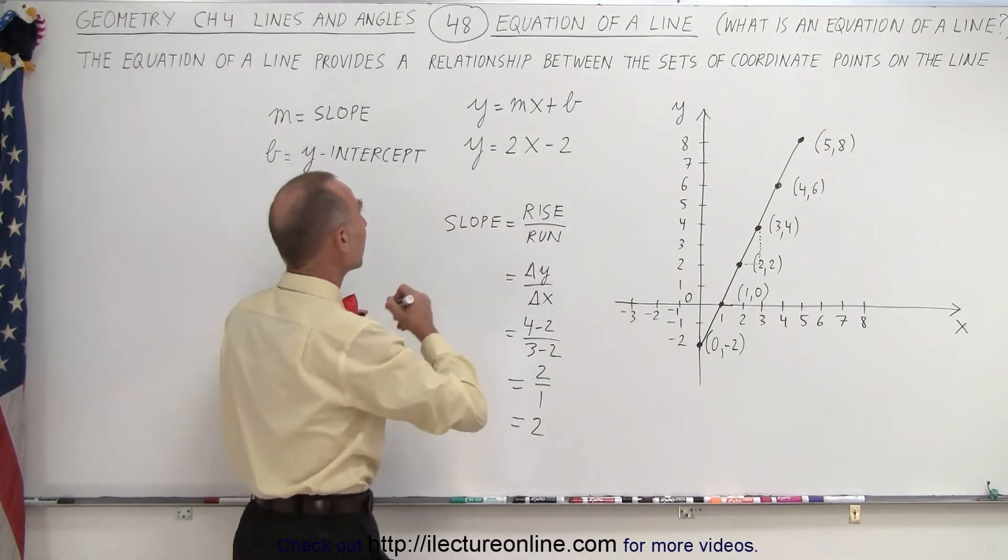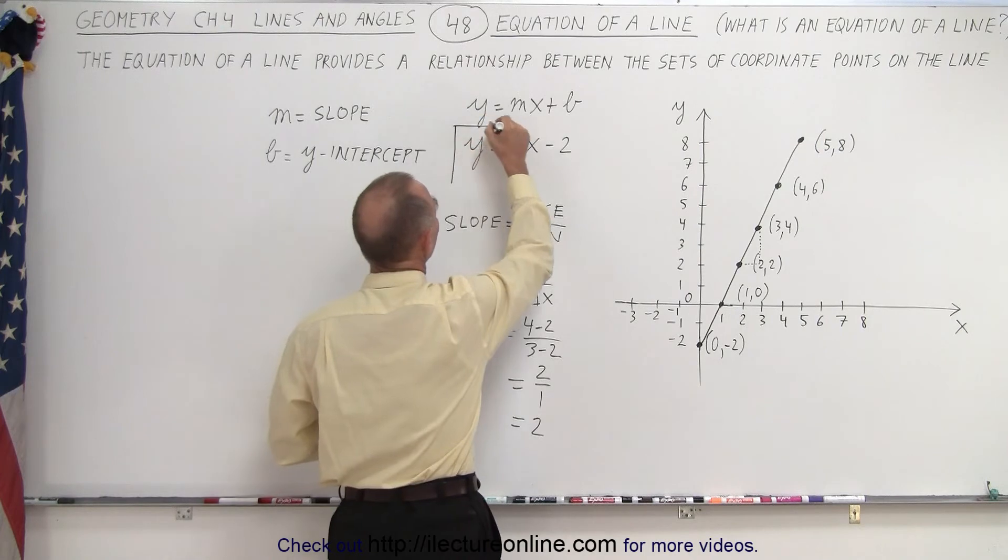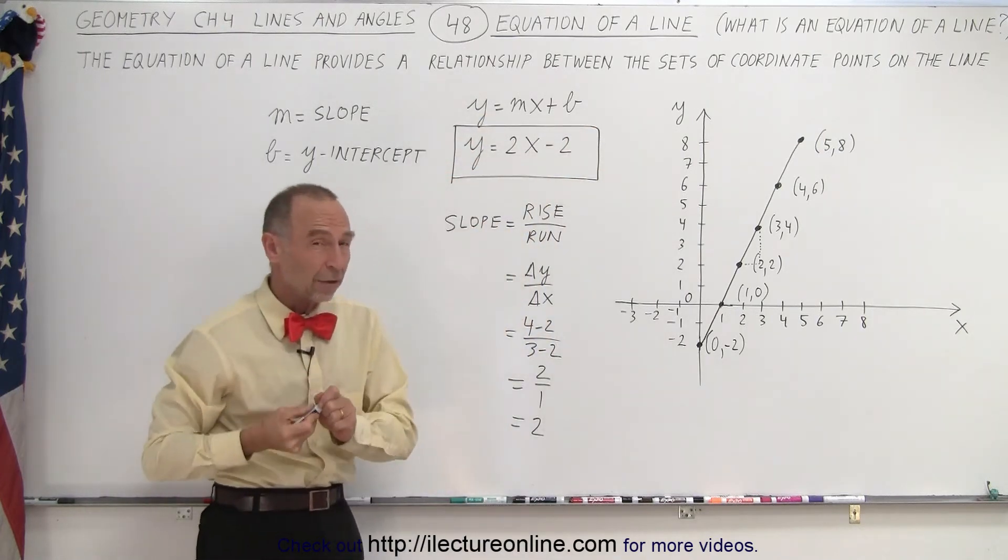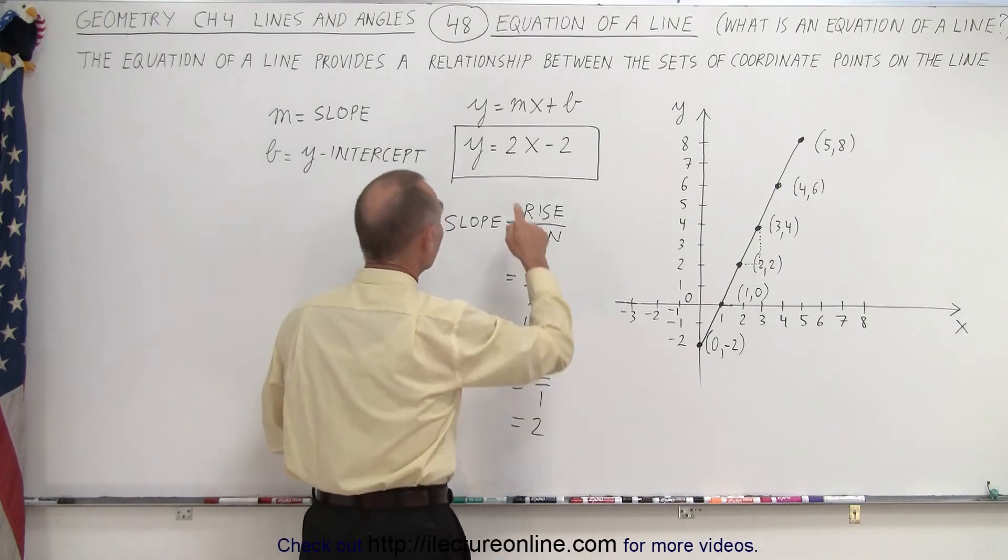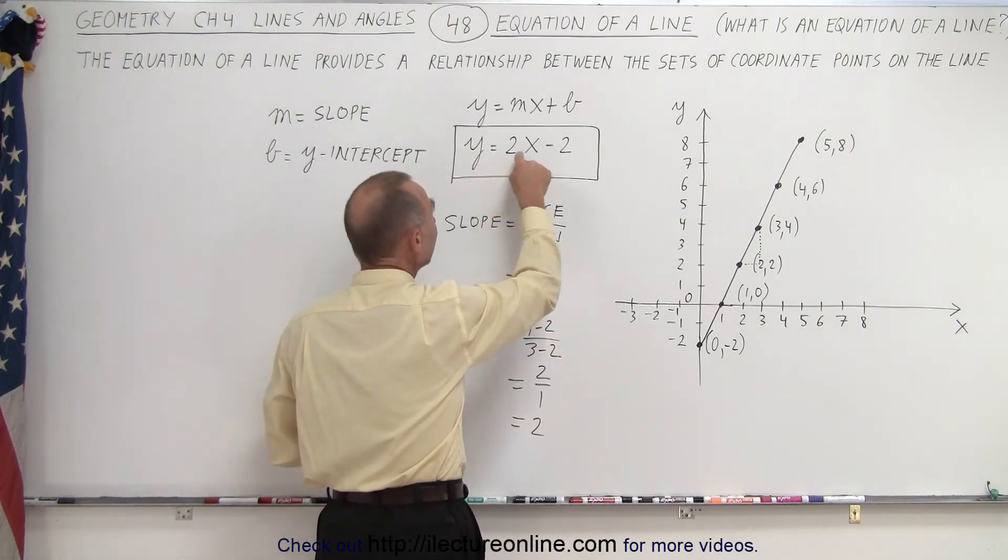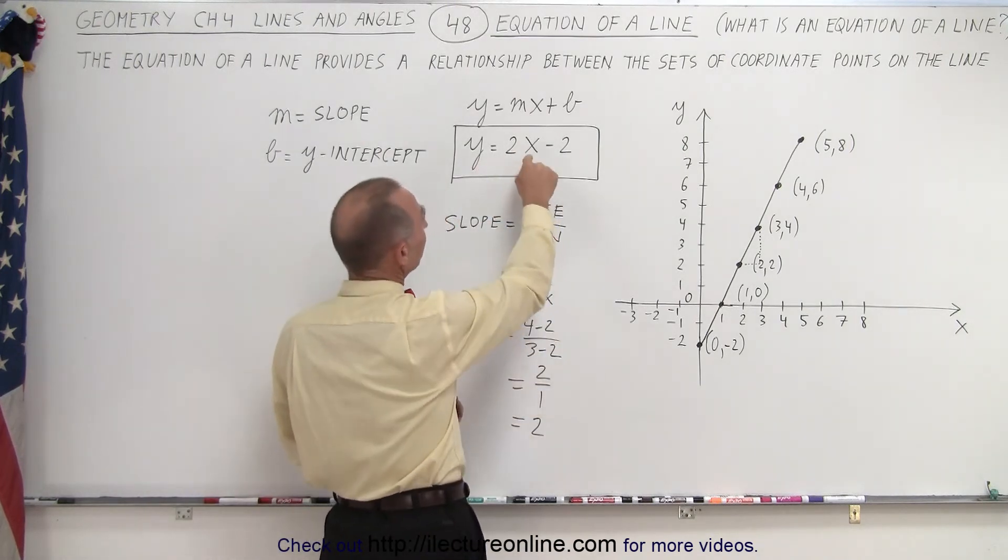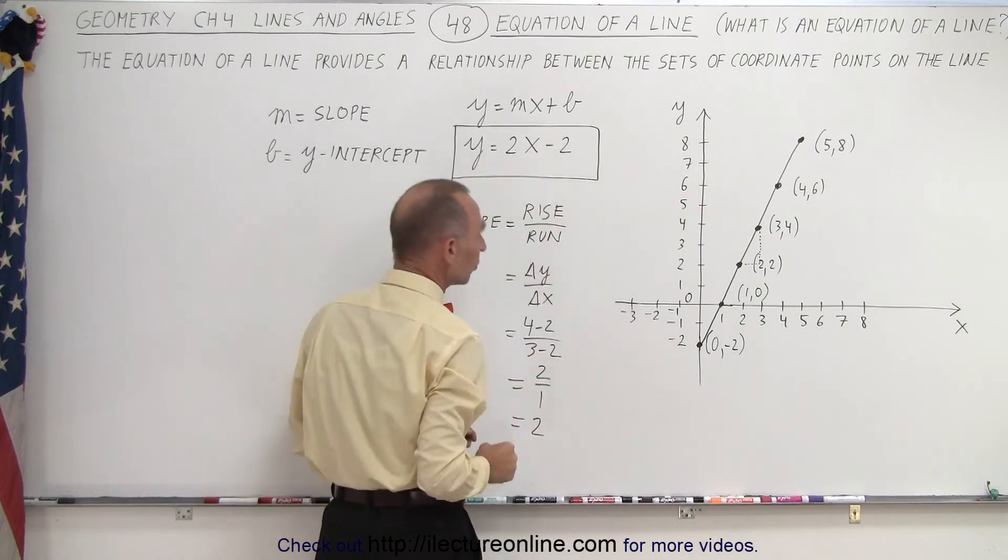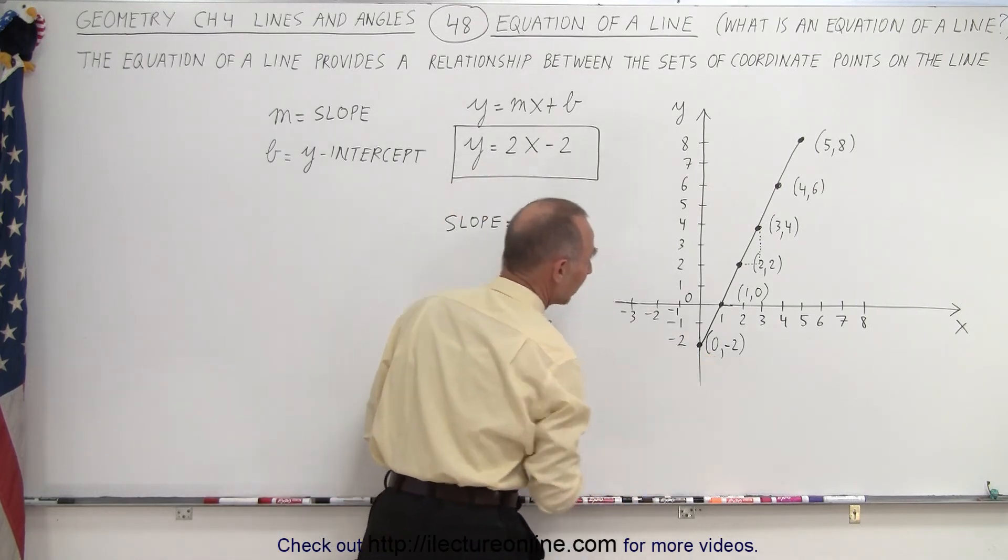So now, what does that equation give us? This is the equation of that particular line. And what it allows us to do now is it allows us to find a value for y for any value of x that we give. You plug in a value for x, for example, 0. If x is 0, 2 times 0 is 0. 0 minus 2 means y equals negative 2. And that's exactly what we have over here.